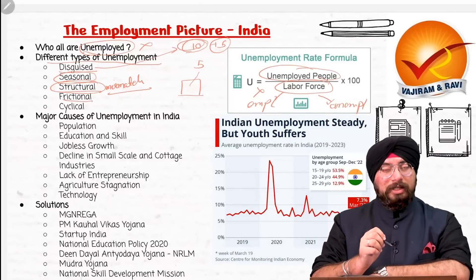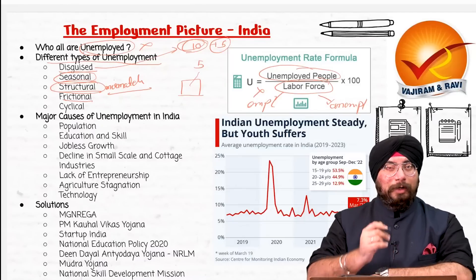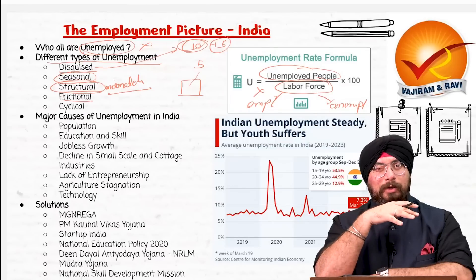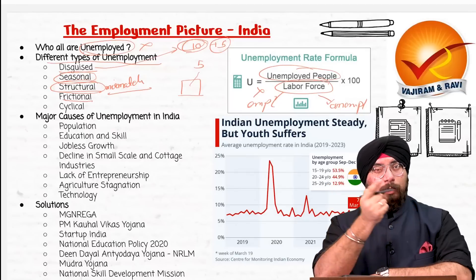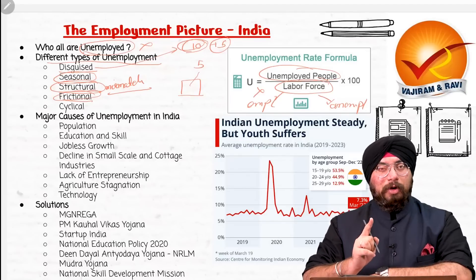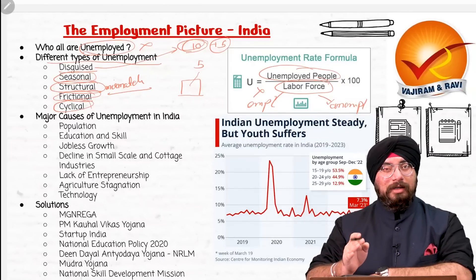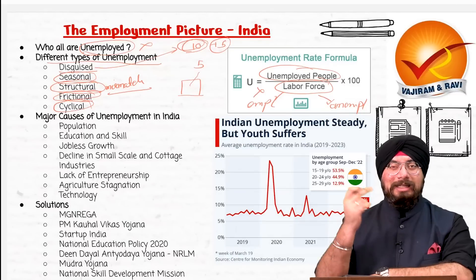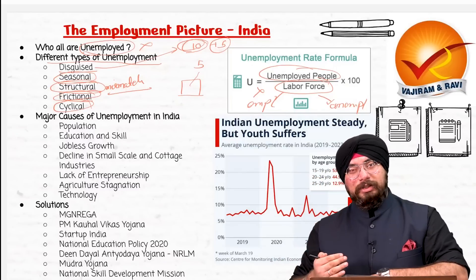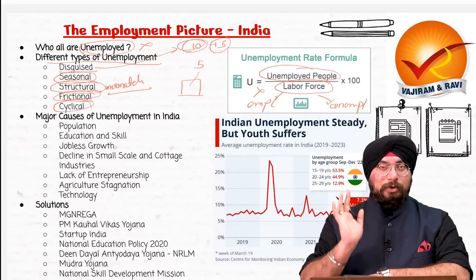There is also frictional unemployment, which happens when a person is switching between two jobs. For example, I resign from a place and for one month I'm looking for new opportunities. For that one month where I remain unemployed, I will be called frictionally unemployed. Then there is cyclical unemployment as well. During times of recession, unemployment is high and many people lose their jobs. When the economy is booming, unemployment is lower. This kind of unemployment is known as cyclical unemployment, which changes based on the economic cycle.